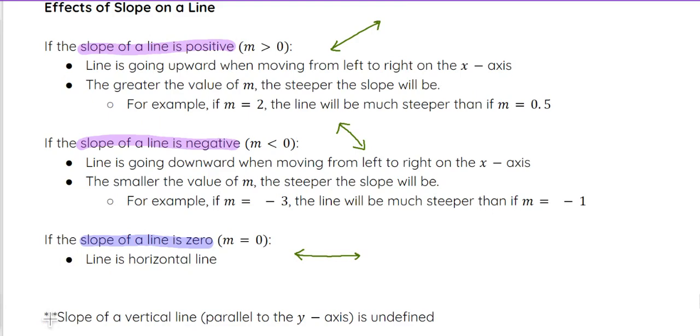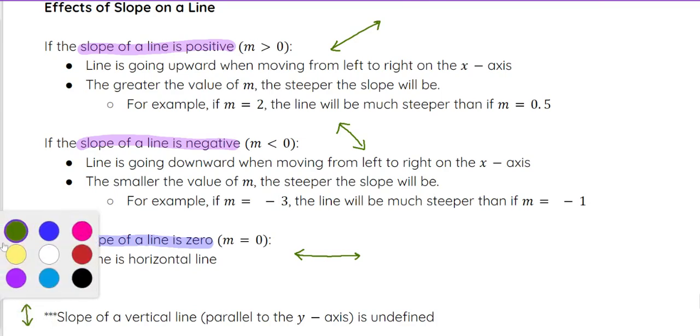A slope of a vertical line is going to be undefined, and technically that is not a function. So that is a line, but it's not a linear function — which is why we really look at three cases for linear functions.